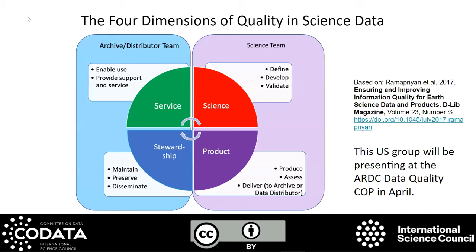I started to delve into work by Ramapurin et al on ensuring the quality of information, designed for quality of data in science. It breaks quality up into four dimensions: first, the content — what are the terms being used, are they endorsed, are they valid? Then you put that content into a vocabulary. In the bottom right is the product. Then you have to steward and preserve it so others can use it. And finally, you're making it available as a service. This US group will be presenting at the ARDC Data Quality Community of Practice in April, if you're interested in following this quality dimensions theory.